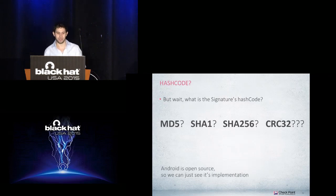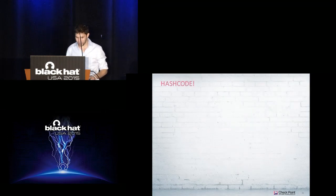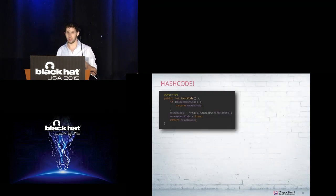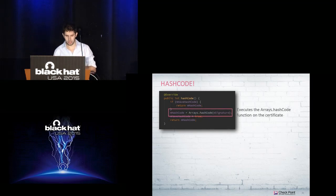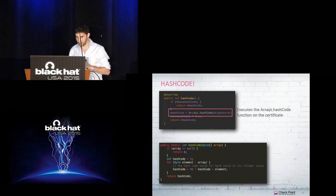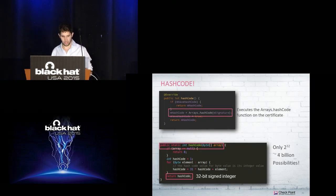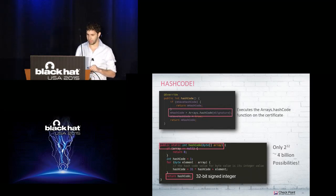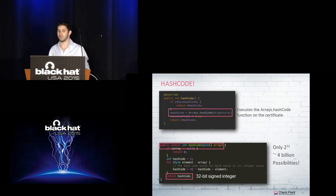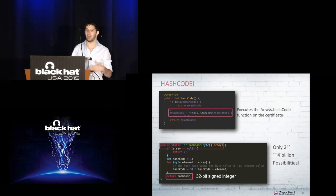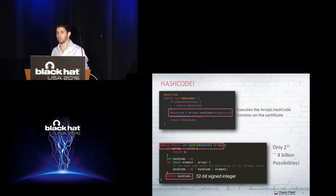Going into the code, we saw that the signatures object's hash code function calls the arrays hash code function, which does a quick calculation and returns a 32-bit signed integer. Some of you may recognize this is the default Java hash code function. As you probably know, returning an integer has only about four billion possibilities — that is not too many. We wrote a simple script that generated a lot of certificates, and after a few hours we got a certificate that matched one of the hard-coded serial numbers. So again, we could sign an app with this certificate and connect to the plugin.